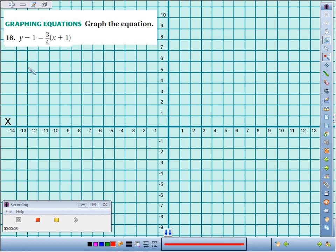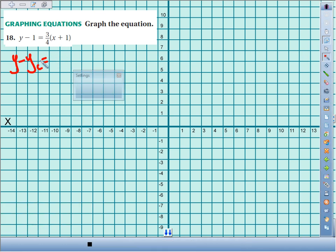Number 18, we're going to graph the equation y minus 1 equals 3/4 times the quantity x plus 1. This equation is written in point-slope form, so y minus the y coordinate equals slope times x minus the x coordinate.